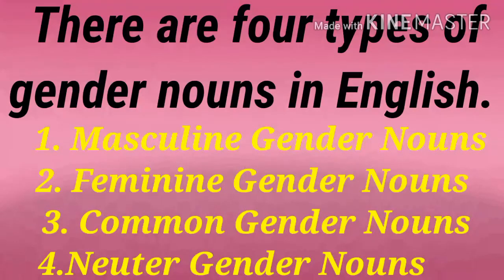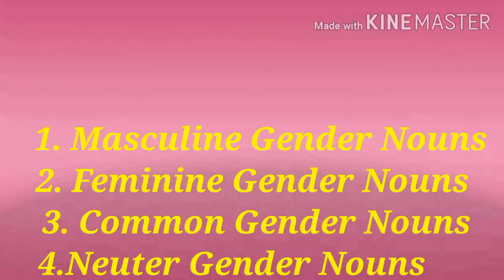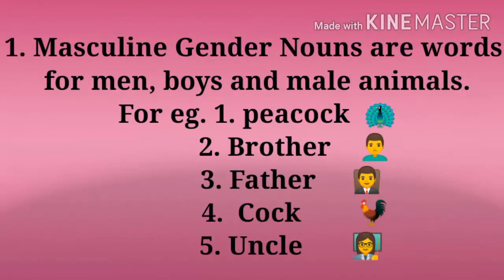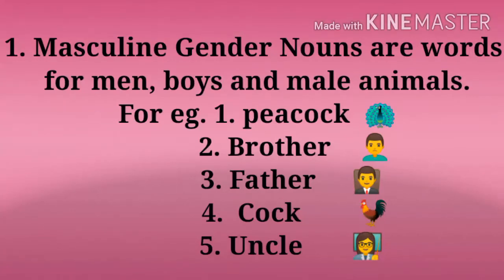Now let me explain with examples. Number one: masculine gender. Masculine gender nouns are words for men, boys, and male animals — like peacock, brother, father, cock, and uncle.